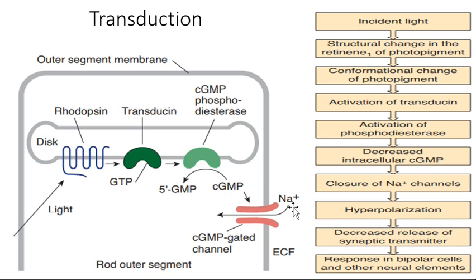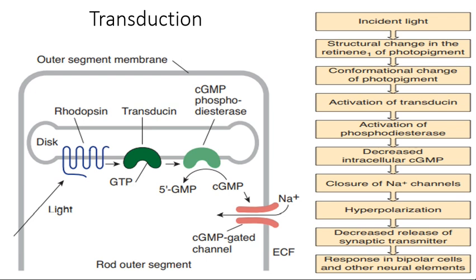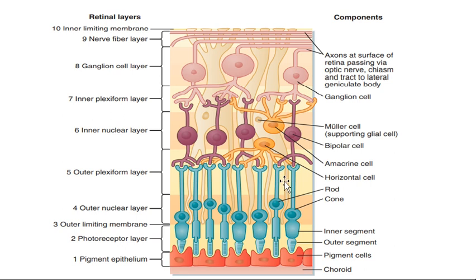When cyclic GMP is high, sodium channels are open; but in the presence of light, cyclic GMP decreases, sodium channels close, and sodium influx stops — leading to hyperpolarization of the photoreceptor. This is the unique feature of photoreceptors: light causes hyperpolarization rather than depolarization. So in the dark the photoreceptors fire, and in the light they do not fire — they hyperpolarize.